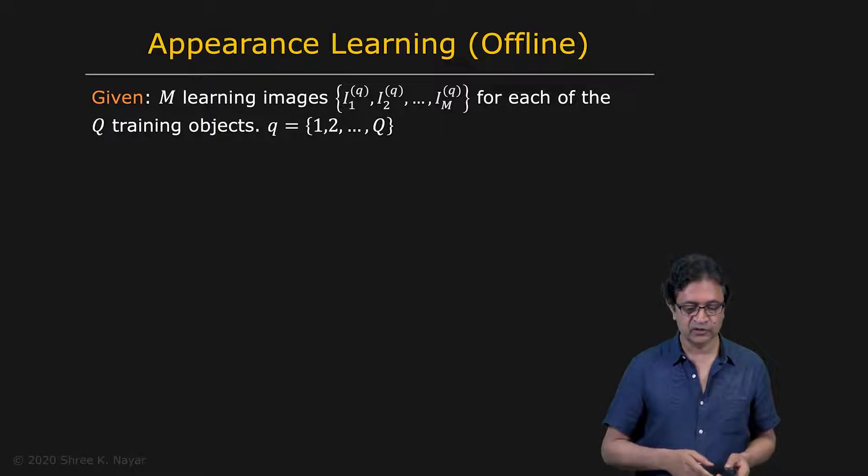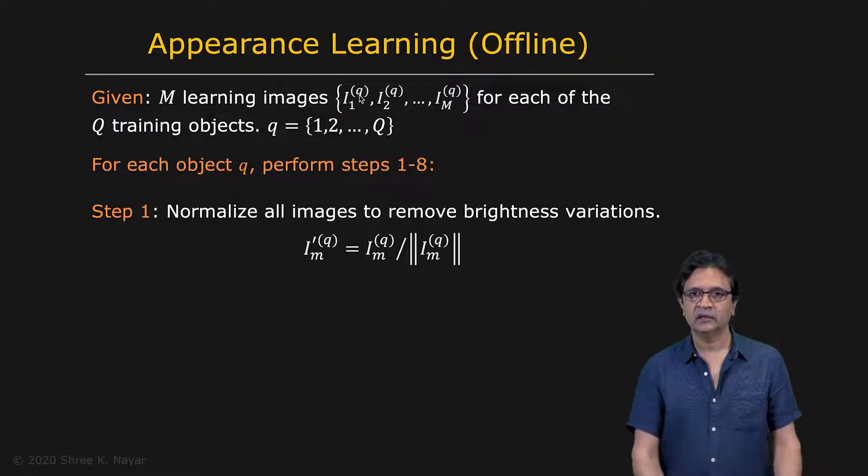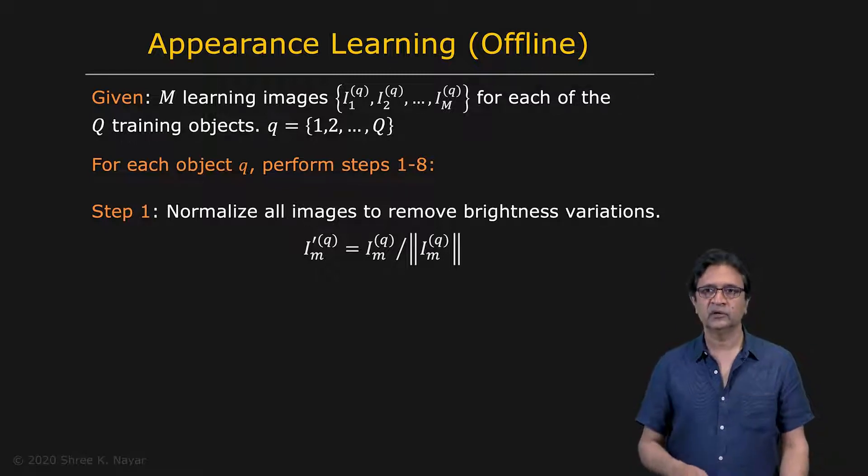Now we have all the tools necessary to perform appearance matching. I'm going to describe the pipeline that we're going to use to apply appearance matching. We first start with appearance learning, which is offline. Let's say you're given Q objects. You want to create a recognition system that can recognize Q different objects, one through Q. For each one of them, you're going to capture M learning images under different extrinsic parameters, I1 through IM for each Q. And for each one of these objects, you're going to perform the next eight steps, the following eight steps.